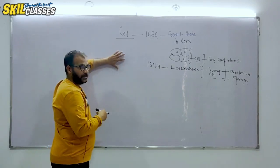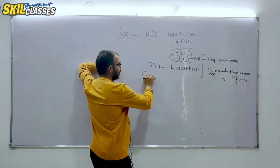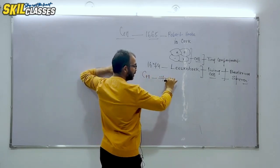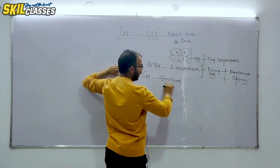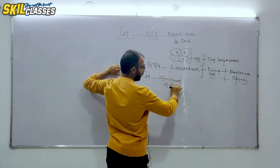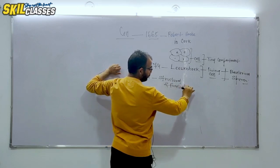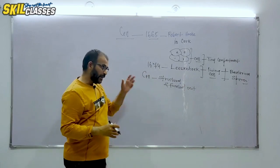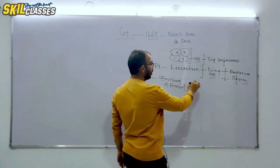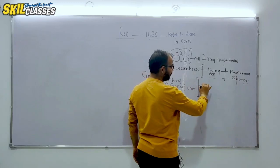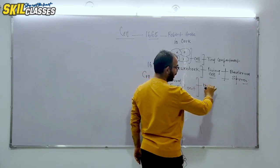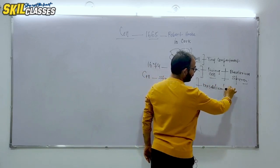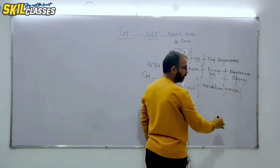As we said, the cell is a structural and functional unit of organisms in the living world. Individually, a cell is capable of doing all the functions like metabolism, excretion, and respiration. All these happen inside the cell.